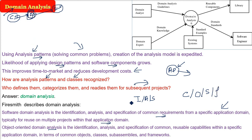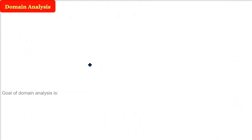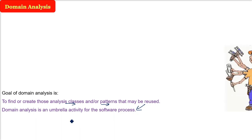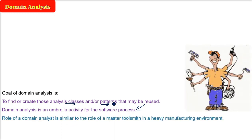There are two things: reuse and then applying it to multiple projects. What is the goal? What is the end point you want to achieve? First, you want to find or create those analysis classes or patterns that may be reused. So the main thing is reusing and finding out the analysis class and pattern. So this domain analysis is not only pertaining to requirement modeling. It is an umbrella activity for the whole software development life cycle. This activity will be carried out throughout.